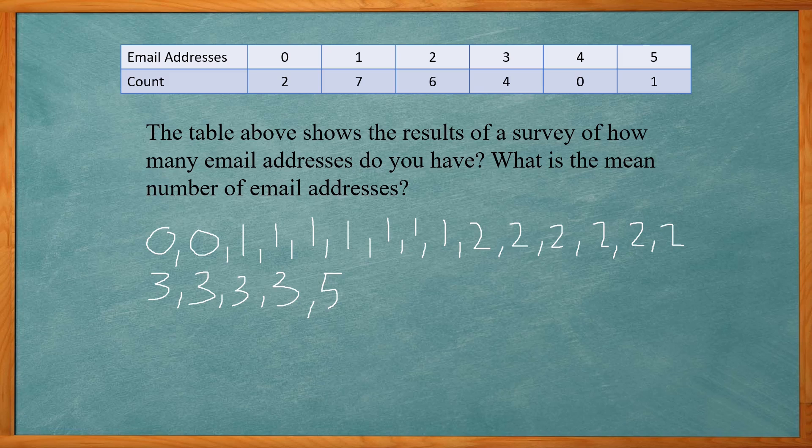So how you find the mean normally is to add up all these numbers and divide by how many there are. So if I add these all together I get 36, and there are 20 of them all together.